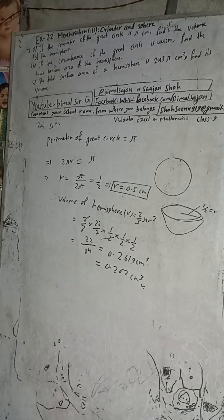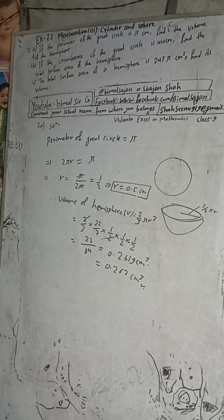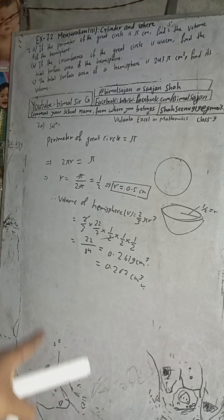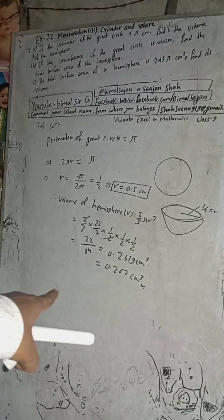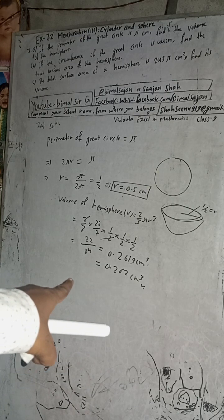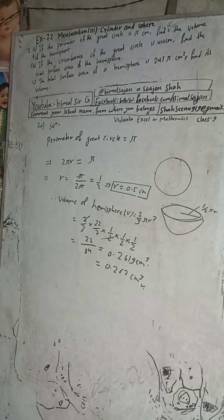In the old book this answer is wrong — there is a print mistake showing 1.22 cm³. In the new publication the correct answer is 0.262 cm³.